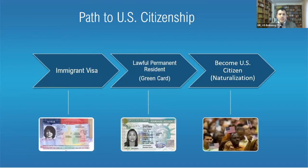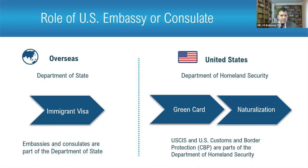To sum up the path to U.S. citizenship for a foreign relative: first you get your immigrant visa, then you go to the U.S. and get your green card, and then you naturalize to become a U.S. citizen. Overseas, embassies and consulates — part of the Department of State — conduct visa interviews for immigrant and visitor visas. When you get to the U.S., you'll deal mostly with the Department of Homeland Security: Customs and Border Protection greets you at the airport, and U.S. Citizenship and Immigration Services handles your paperwork and naturalization.